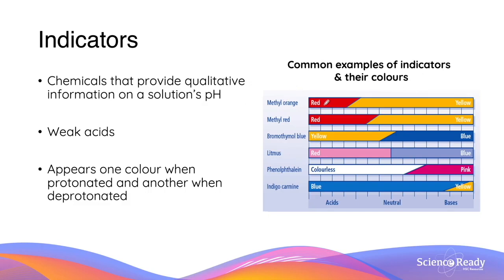Methyl orange is red at acidic pH and yellow at basic pH. We have a chart with a scale on the bottom going from 0 to 14. The colour change range for methyl orange is around 4 to about 5.3, so that's the range in which methyl orange changes from red to yellow — below that it's red, above that it's yellow. Similarly for methyl red, and then bromothymol blue, litmus, phenolphthalein, and indigo carmine.